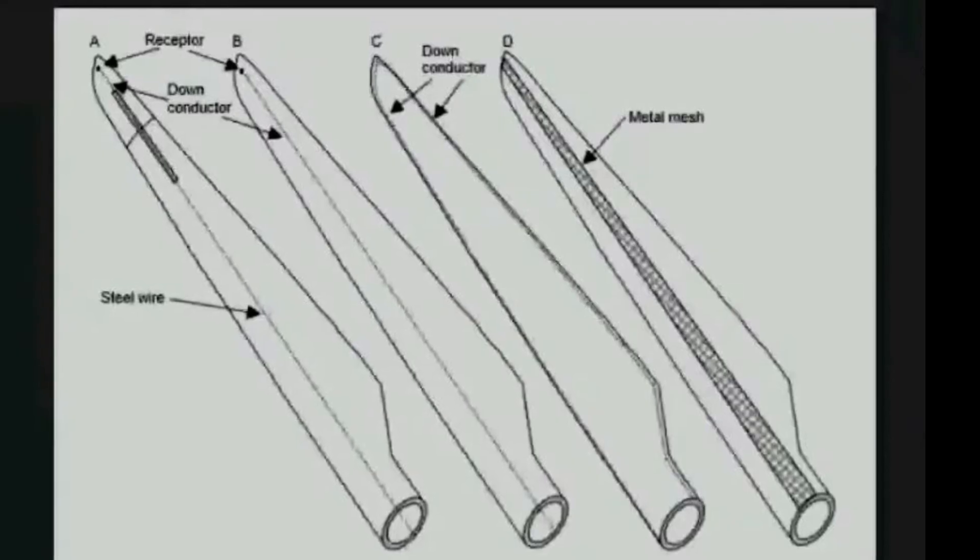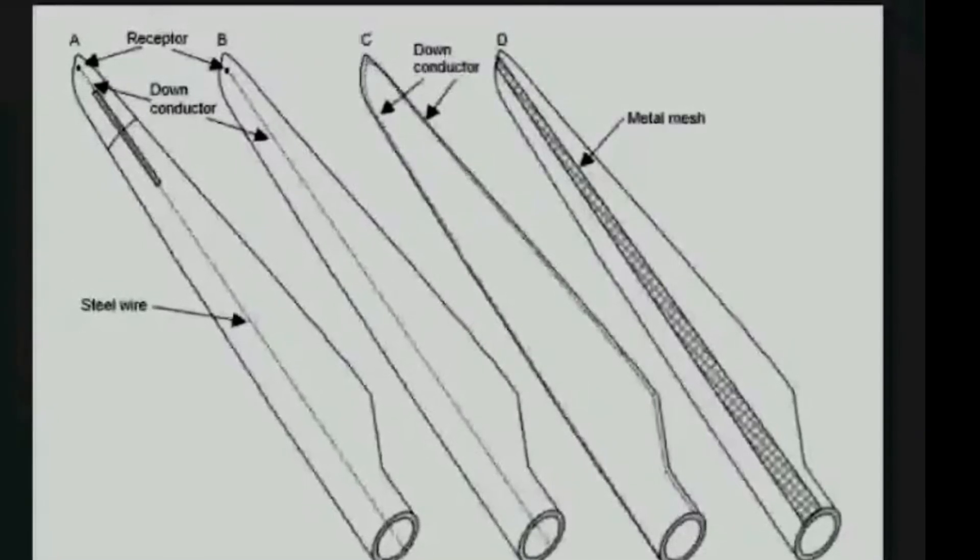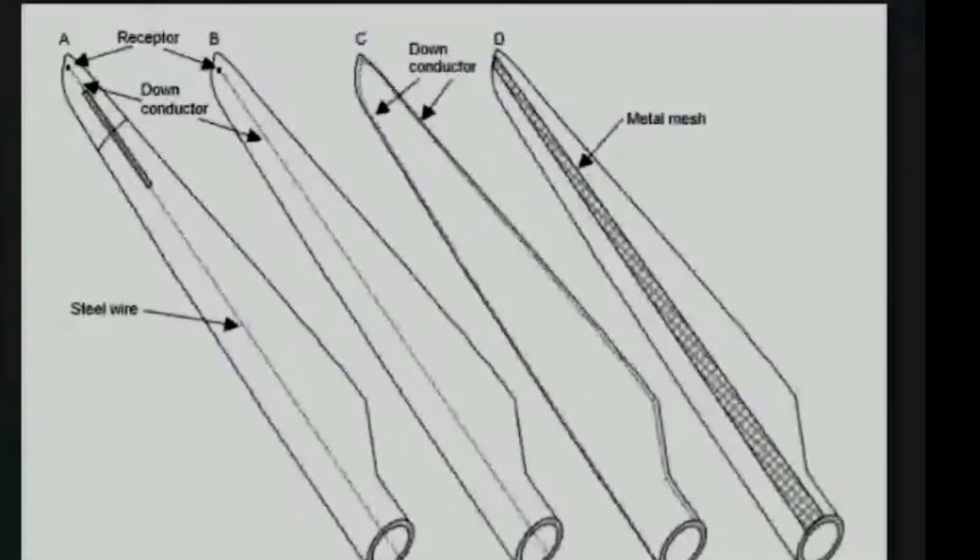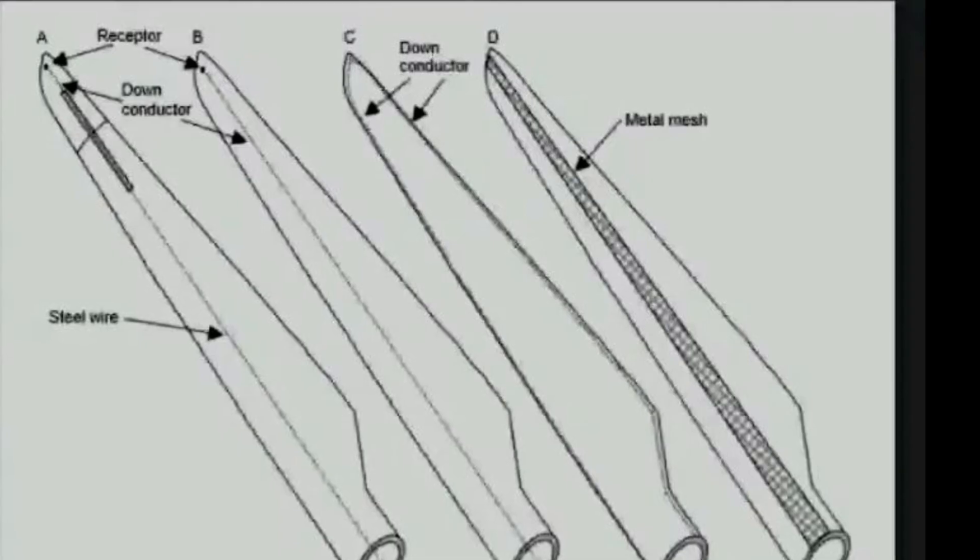Wind turbines have special lightning protection systems in place to keep them safe. Lightning protection consists of four main components: a network of strike termination devices, which are lightning rods.